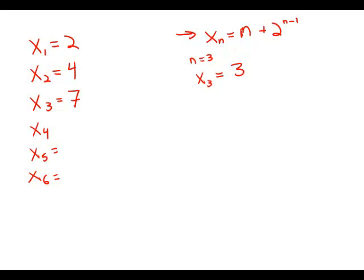x sub 3, the third x, should equal 3 plus 2 to the 3 minus 1. Well, that's 3 plus 2 squared, 3 plus 4, which is 7. And that's exactly what they gave us for the third value. So this is how the formula works.